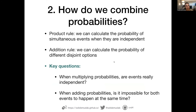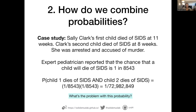As a summary: the product rule lets us calculate probability of simultaneous events when the events are independent; the addition rule lets us calculate probability of two events in an either-or scenario, but only when the options are disjoint — they cannot happen at the same time. The key questions going forward are: when multiplying probabilities, are these events really independent? And when adding probabilities, is it truly impossible for both events to happen at the same time? If not, we need to subtract the intersection.